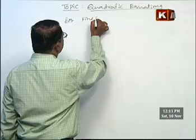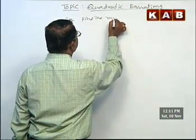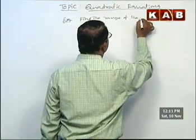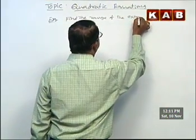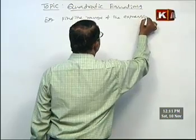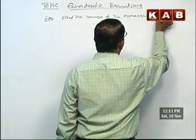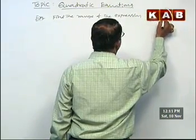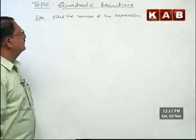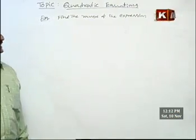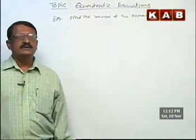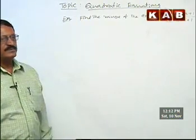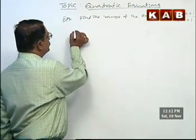Next example: Find the range of the expression (x squared plus x plus 1) divided by (x squared minus x plus 1). Range means the minimum and maximum values of the expression. Now, solution.